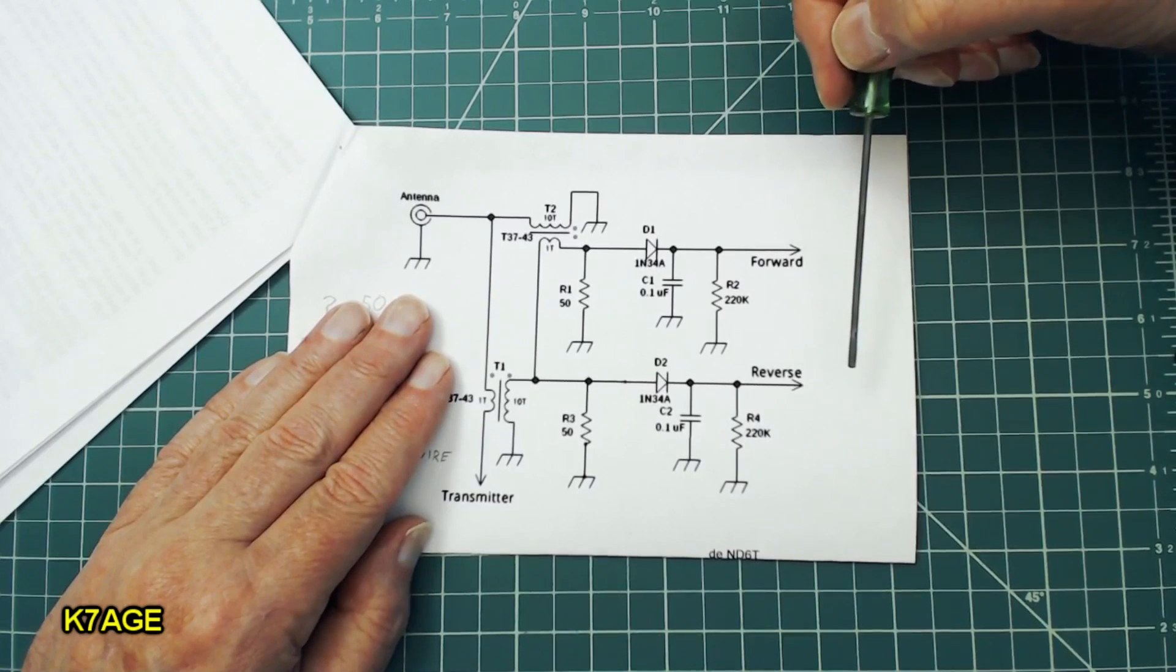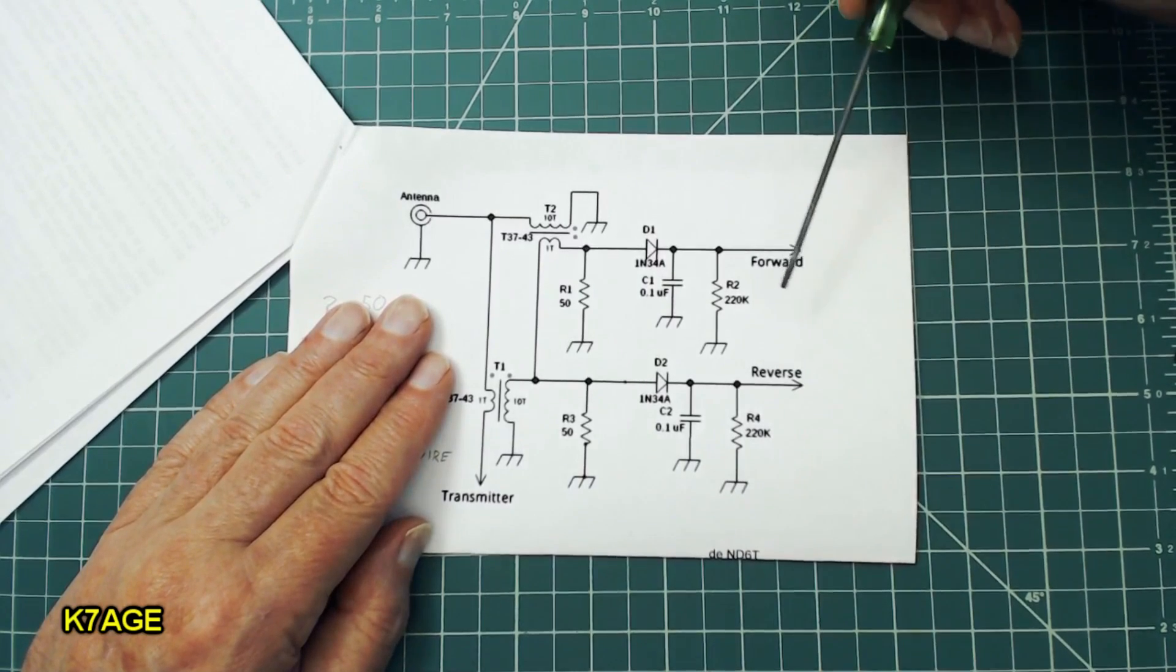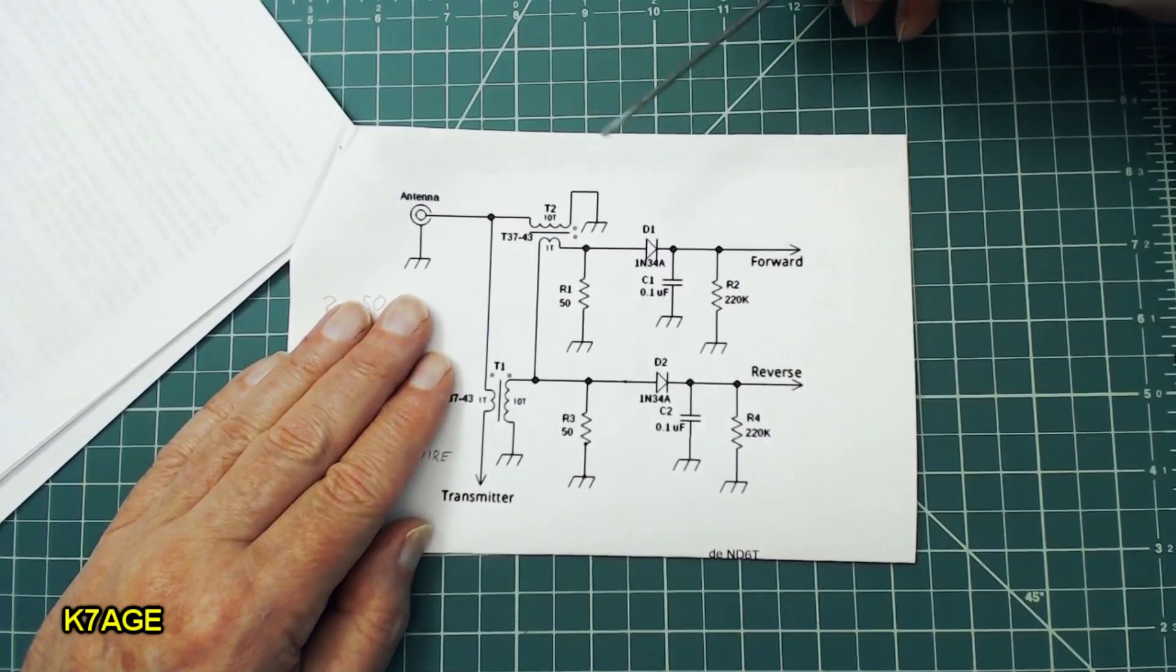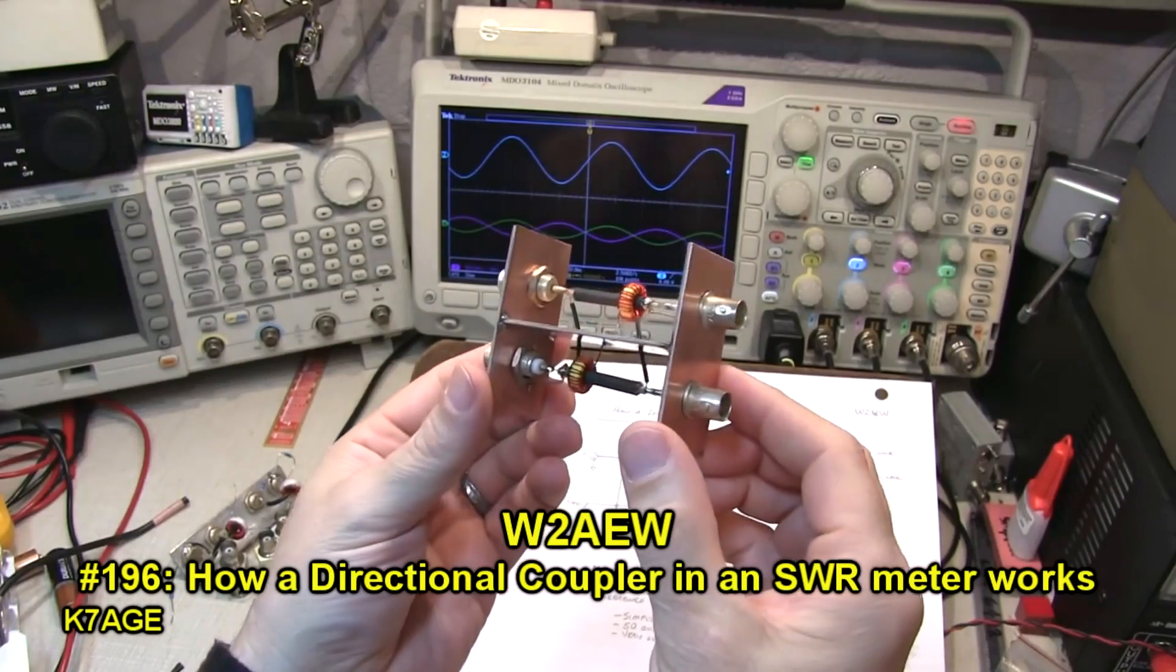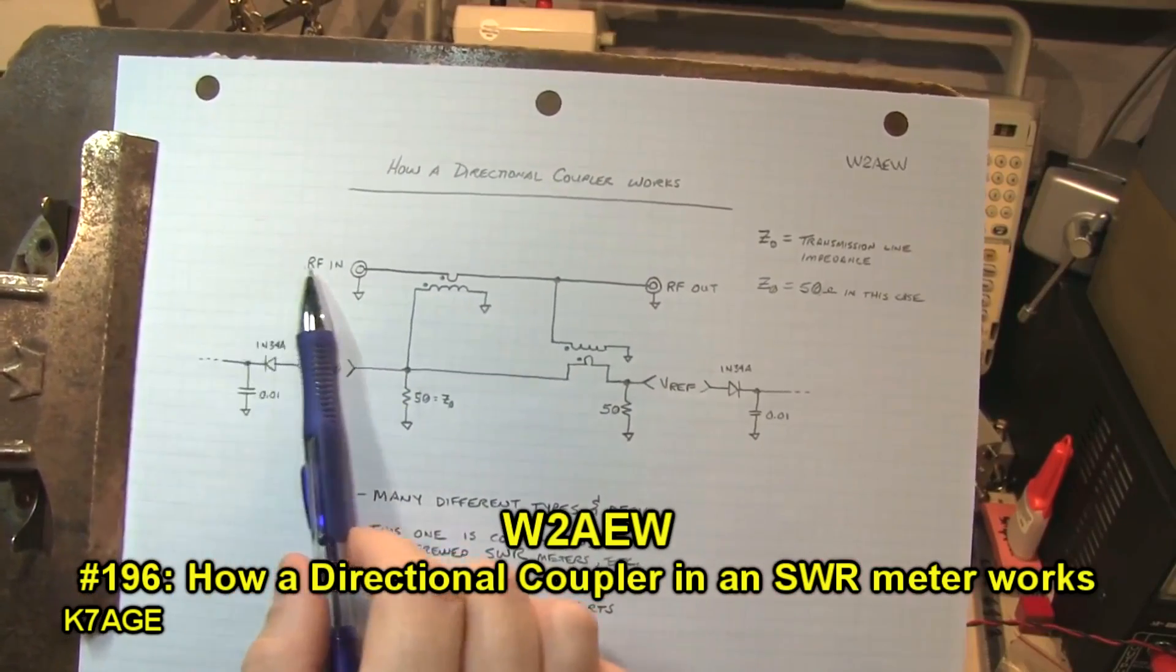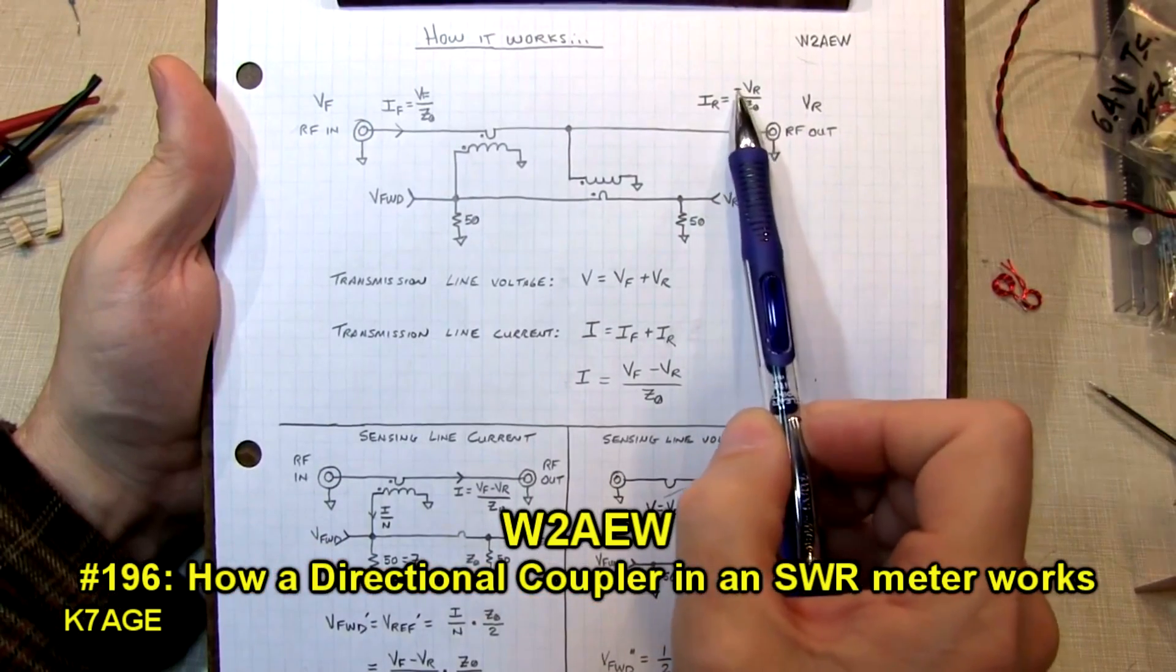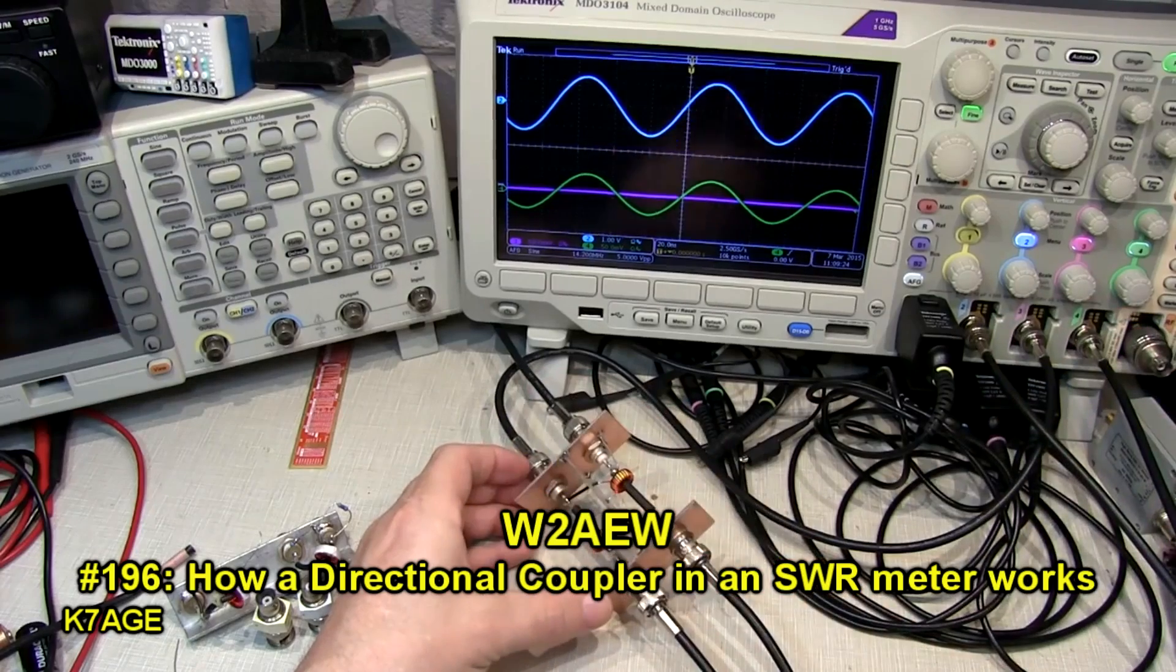So if you just want to build a relative output meter, you can just use the forward. If you want to build an SWR meter, you look at both and calibrate, and then they scale on the meter. Or you could even use a computer, measure the two voltages, and then calculate the SWR. And if you'd really like to know how this circuit works, I would recommend going and watching Alan's video, W2AEW, and he'll explain and show you with an oscilloscope how this all works.